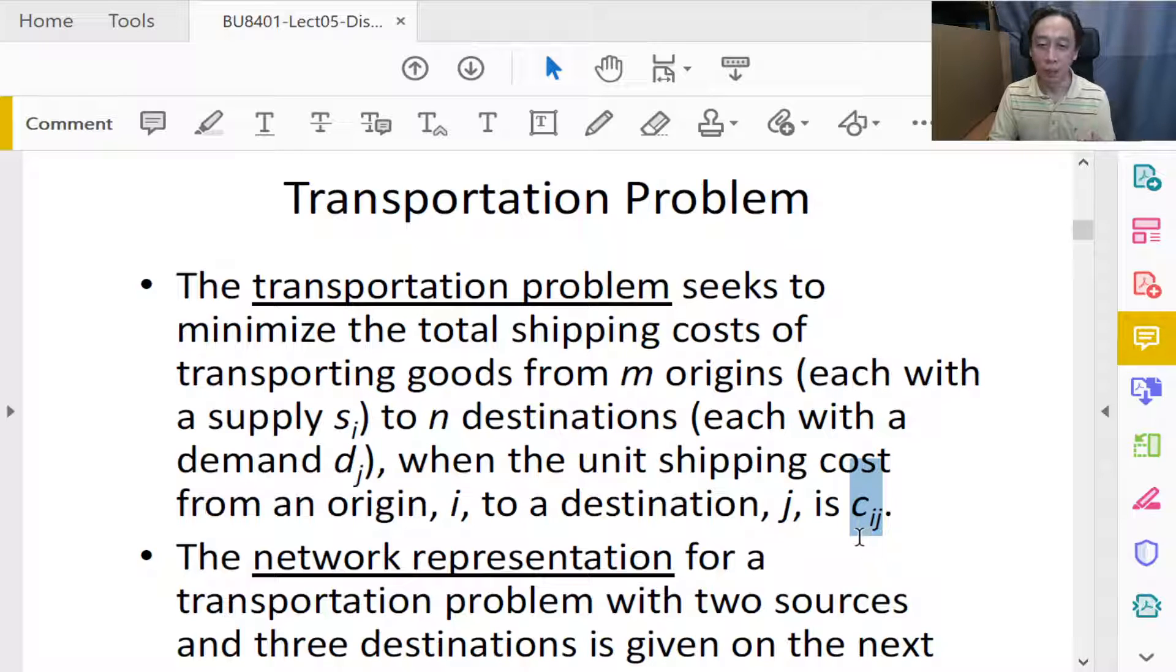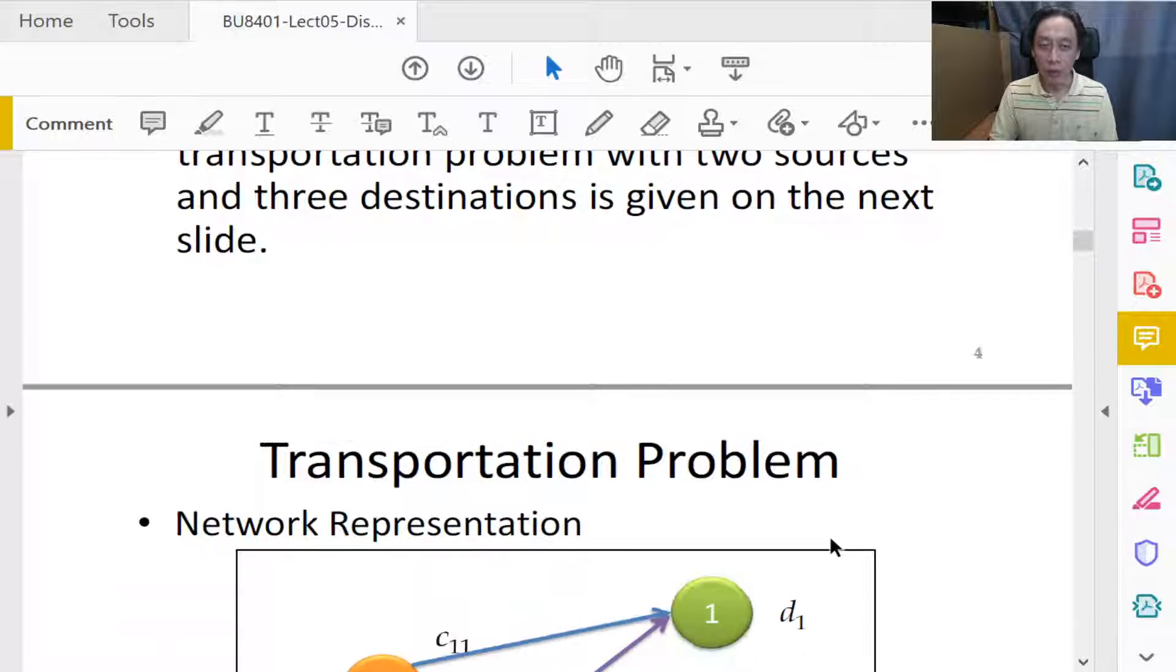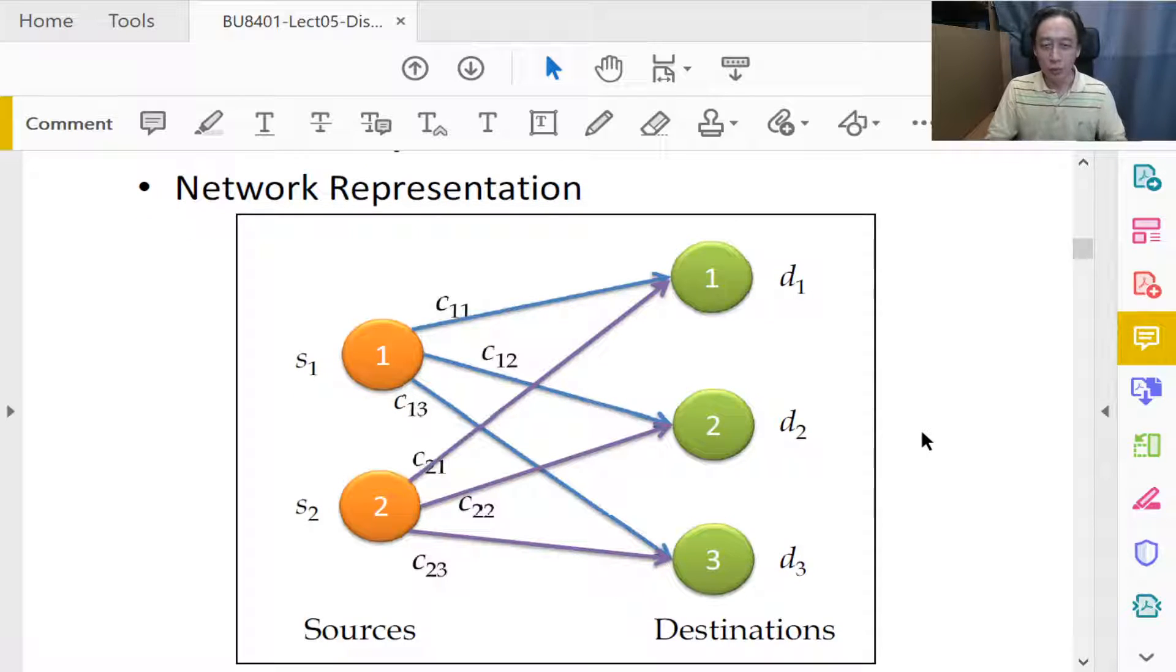Now we look at a network representation because as a diagram it clearly brings out all the structural, the logical structural relationships, and to show us that even though this is factory to warehouse and not retail shop to customers' home, the network representation of both problems will be similar. If we have two factories, then the two factories will have their capacity.